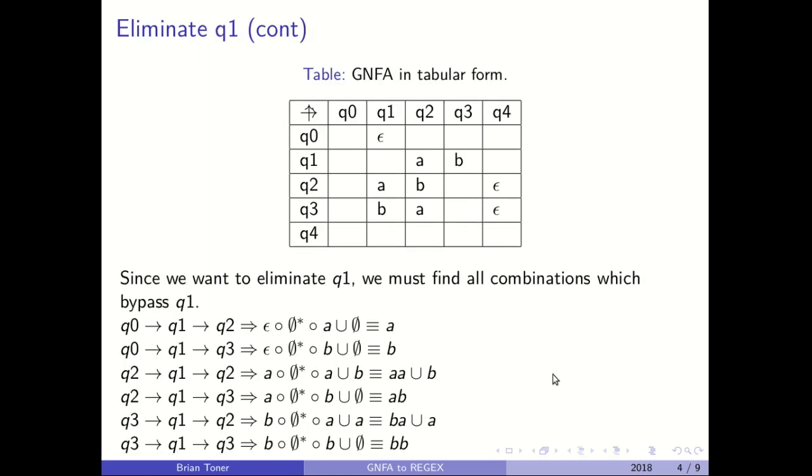So what we do from here is we want to eliminate Q1, and in order to do so we have to find all combinations which bypass this Q1 state. So we are taking basically Q0 going to Q1 and then Q1 going to Q2, Q0 going to Q1 and then Q1 going to Q3, and then so on and so forth, Q2 going to Q1 going to Q2, Q2 going through Q1 going to Q3. And what this allows us to do is it allows us to find all transitions, all regular expressions which can be expressed now without Q1. And the way we are going to accomplish that is we use this equation where we are taking the concatenation of these and unioning it with this last one.